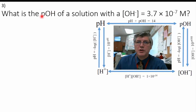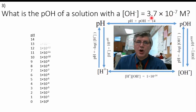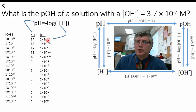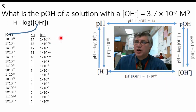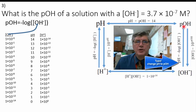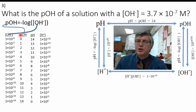Question number three says: what is the pOH of a solution with a hydroxide ion concentration of 3.7 times 10 to the negative 7? Just as the pH is the negative log of the hydrogen ion concentration, the pOH is the negative log of the hydroxide ion concentration. We're going from OH up to pOH. We need a pOH scale — notice that it's the inverse of the pH scale. Something with a pH of 14 has a pOH of 0, and if it has a pH of 13, it has a pOH of 1.